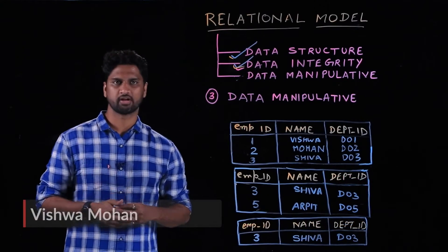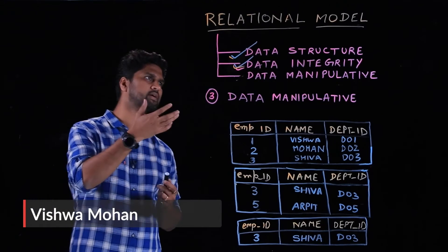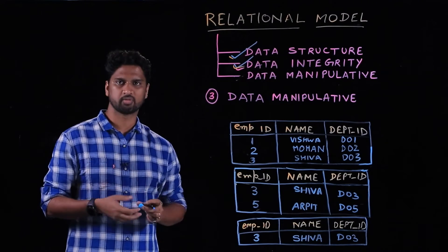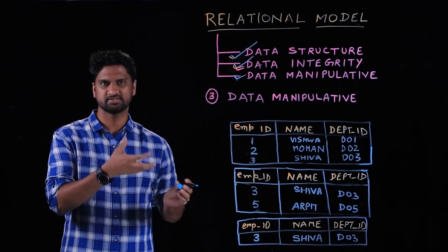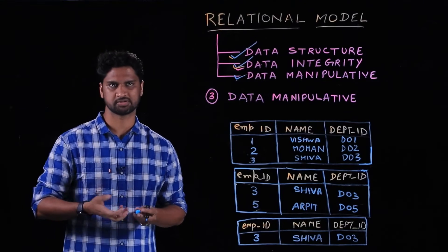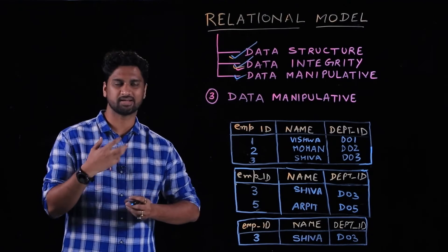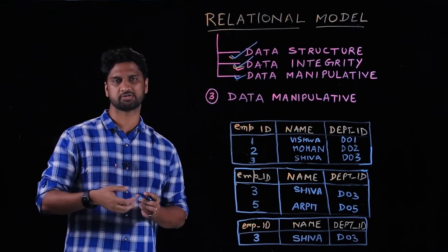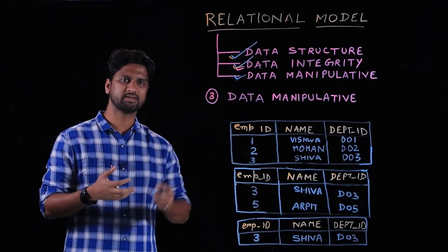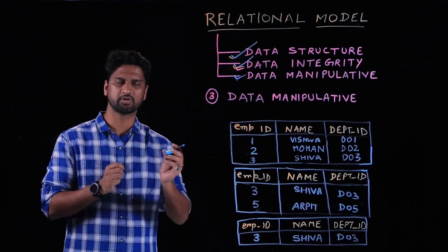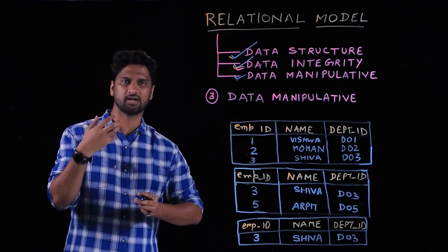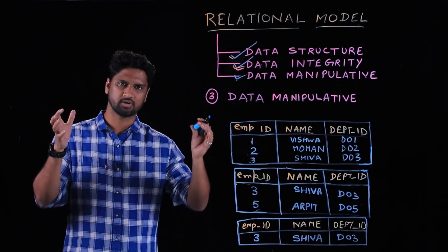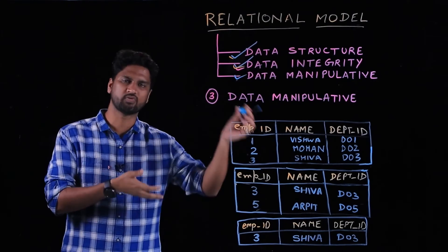Now it's time to talk about data manipulative. As the name suggests, you are trying to manipulate the relationships. Like a standard set operation where you have two sets of data and apply algebraic operations to get a result, similarly in a relational database, when you have two different relations, you can apply relational algebraic operations on them to take the operation between the two relations and get a result in a new form of relation.